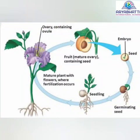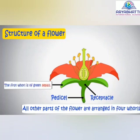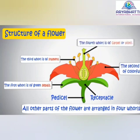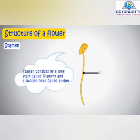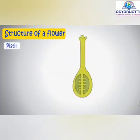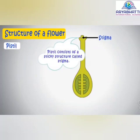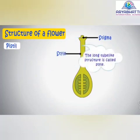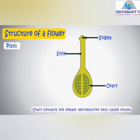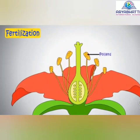In fertilization in plants, a flower has four parts: green sepals, colorful petals, stamens which are the male reproductive part, and carpel or pistil which is the female reproductive part. The stamen consists of a long stalk called the filament and a swollen head called the anther, which contains numerous very small pollens — the male reproductive cells. The pistil consists of a sticky structure called the stigma, attached to a long tube-like structure called the style, which ends in a swollen part called the ovary.